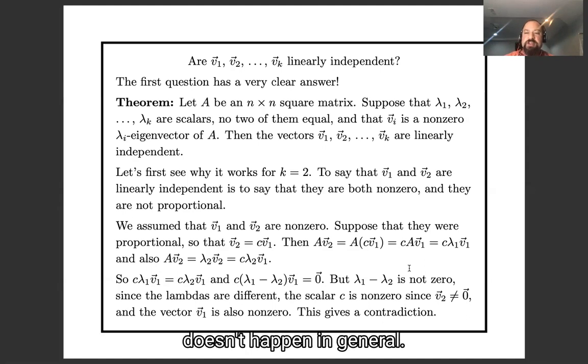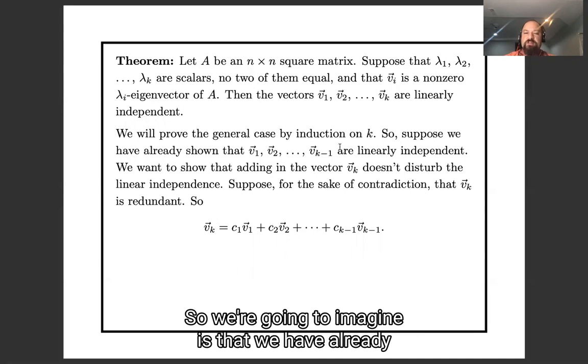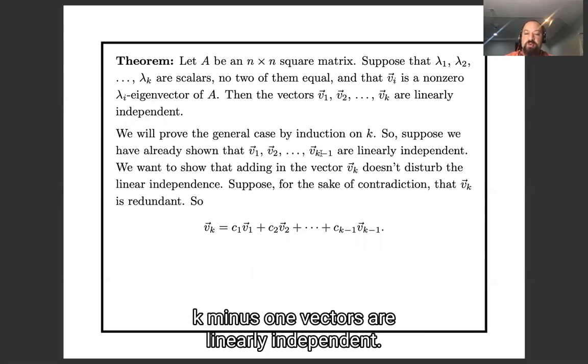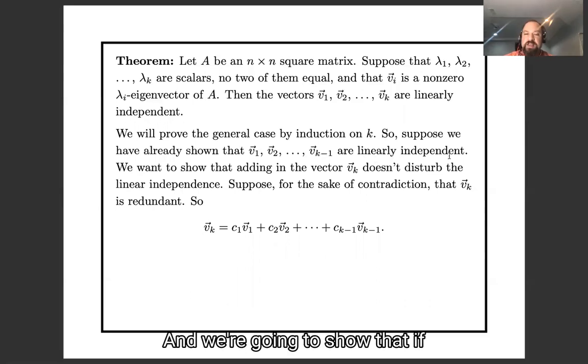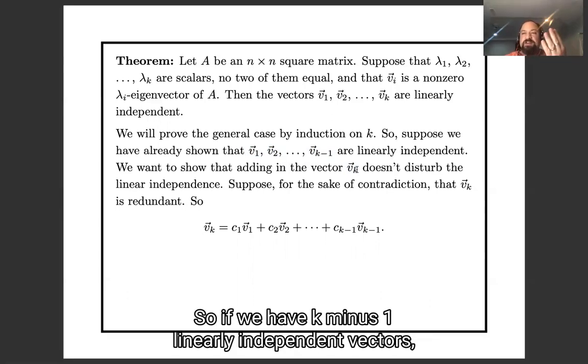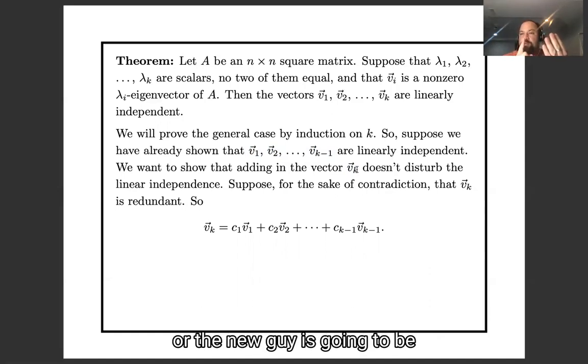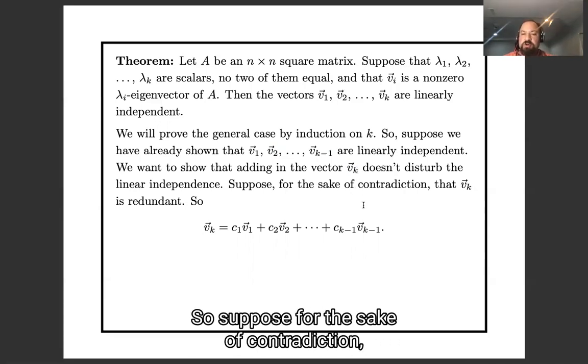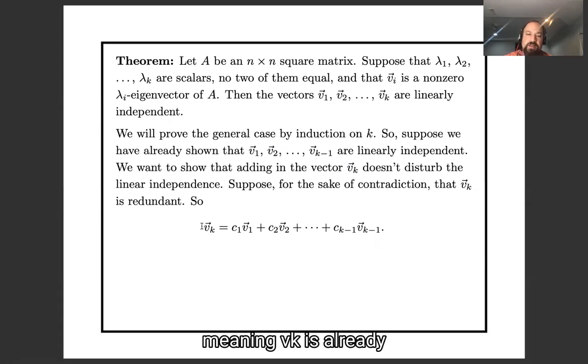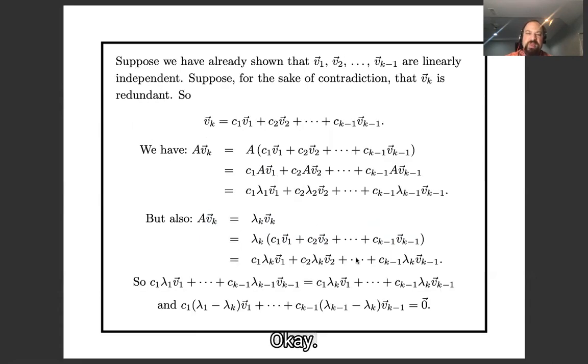And now let's see that this also doesn't happen in general. As you might guess, the proof is going to be by induction. So what we're going to imagine is that we have already shown that the first k minus one vectors are linearly independent, and we're going to show that if we know that these are linearly independent, then adding this last vector to the list doesn't change that. So if we have k minus one linearly independent vectors, and we add one more, one of two things are going to happen. Either we're still going to be linearly independent, or the new guy is going to be a linear combination of the old guys. So suppose, for the sake of contradiction, that vₖ is redundant, meaning vₖ is a linear combination of v₁ through vₖ₋₁.